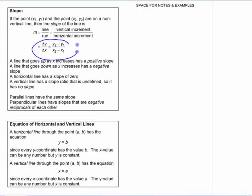You get a formula that looks something like that in grade 10. And again, it just comes from y2 minus y1, just meaning the difference in the y-coordinates of something divided by difference in x-coordinates. I'm not trying to insult your intelligence by putting all this in here, but a line that goes up as x increases has a positive slope. A line that goes down as x increases has a negative slope. A line that's horizontal has a slope of zero. A vertical line has a slope ratio that is undefined, so it has no slope.